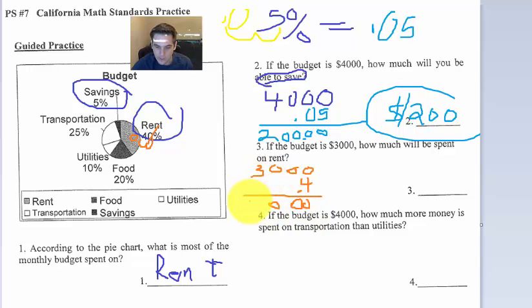4 times 3 is 12. And then we'll get one decimal. So one decimal. So we've got $1,200 is spent on rent.